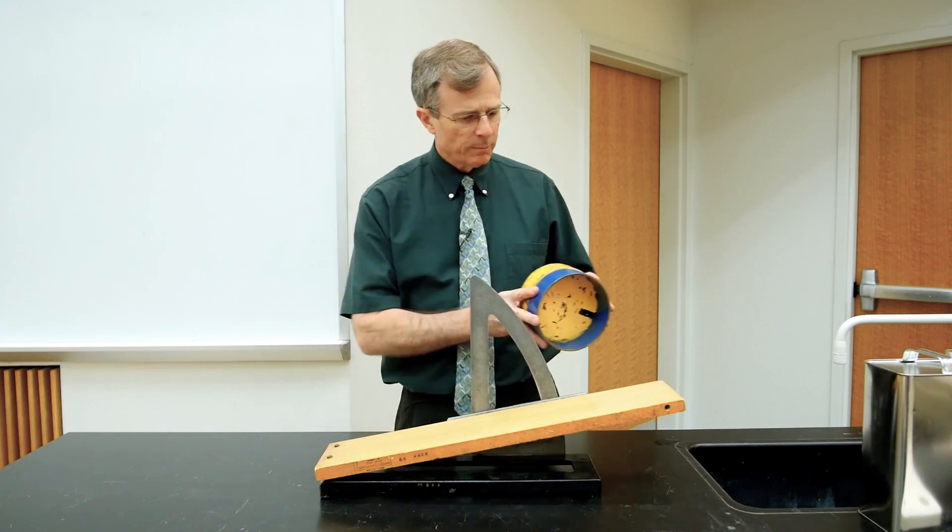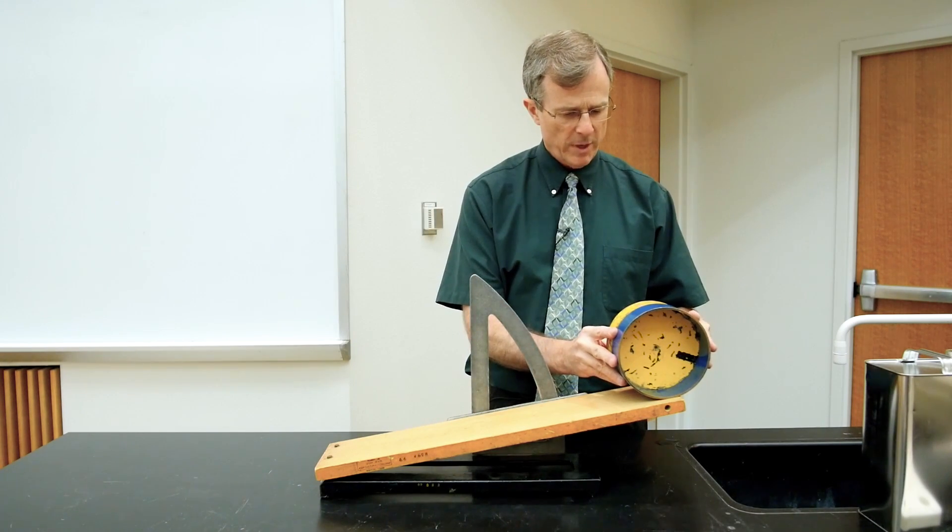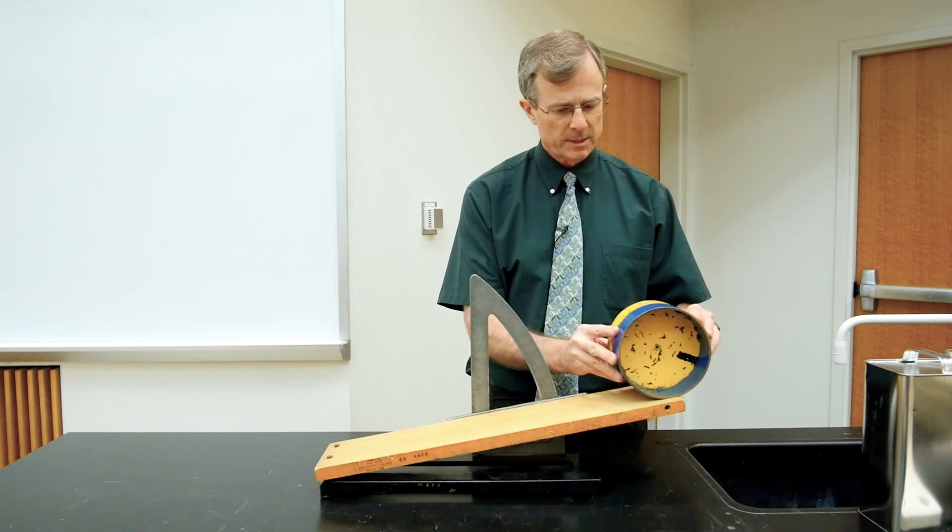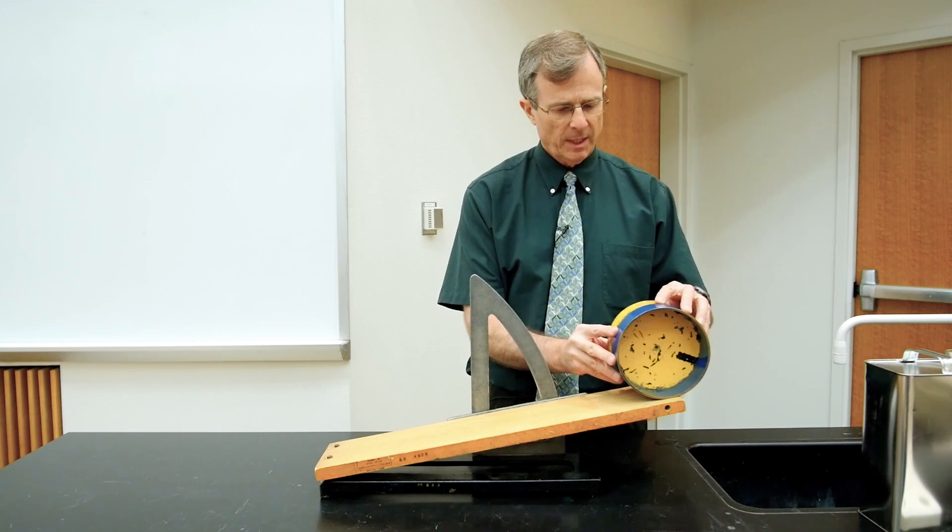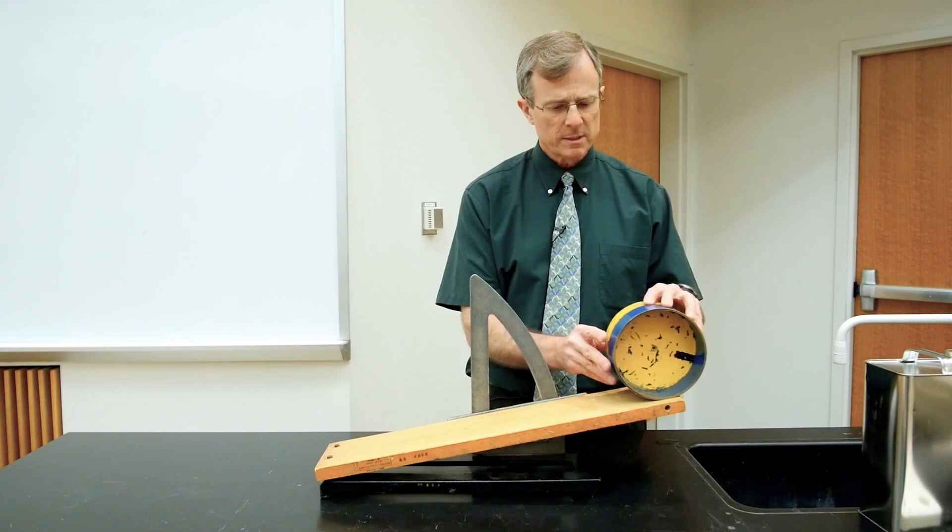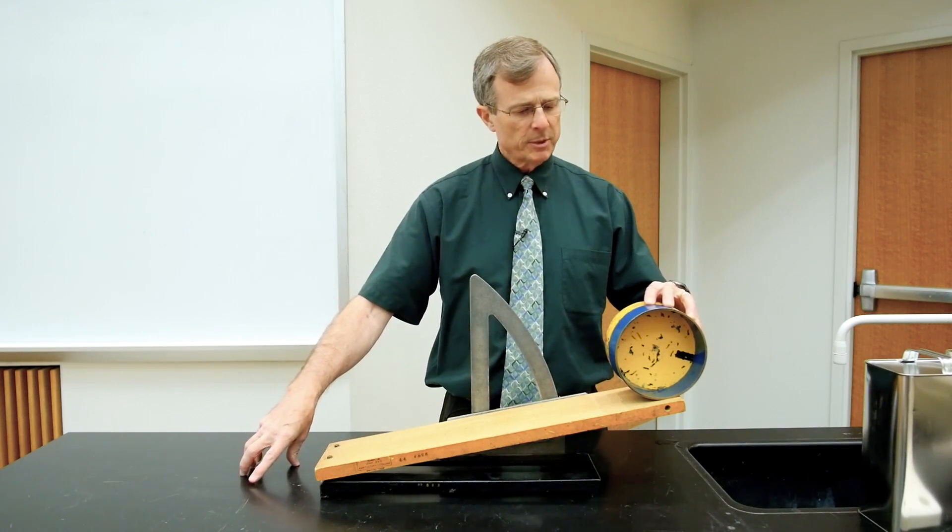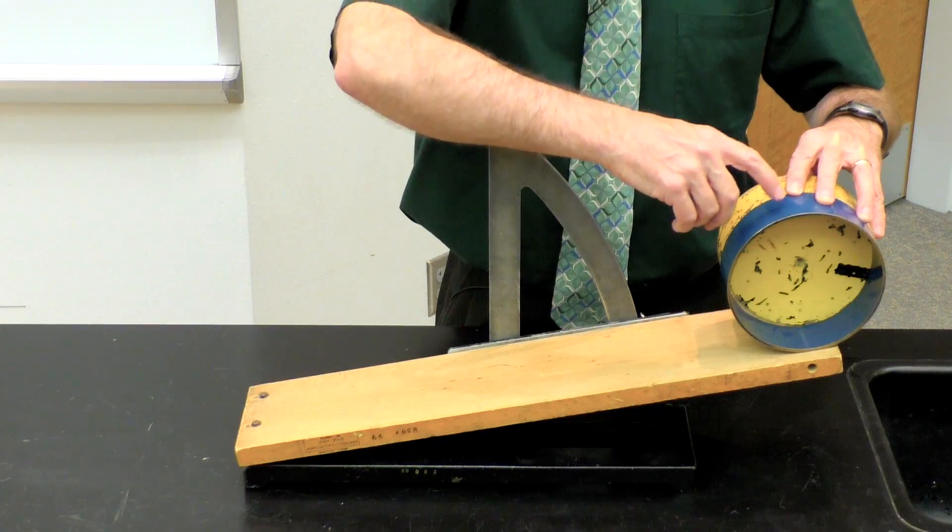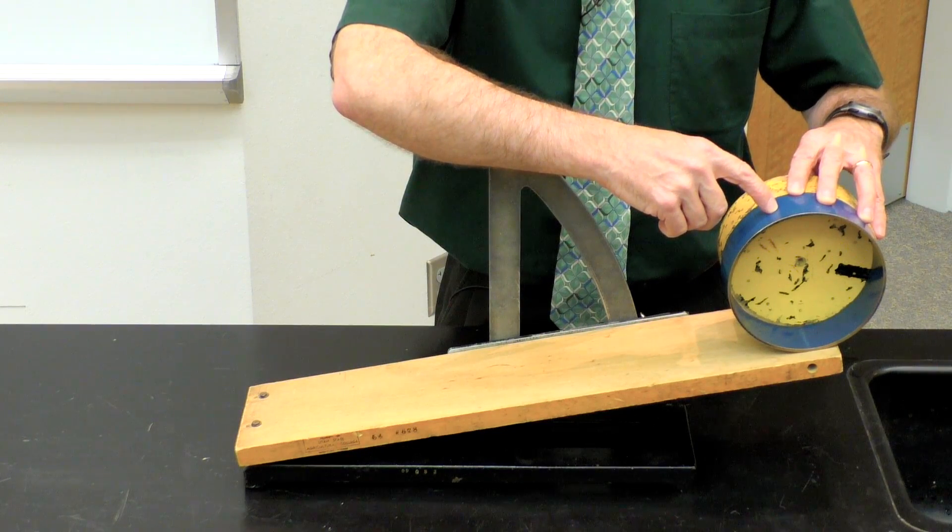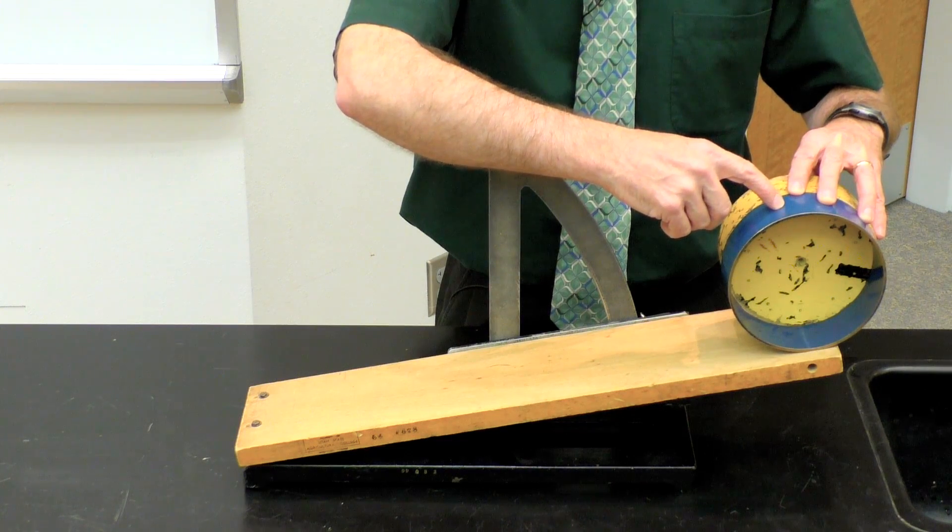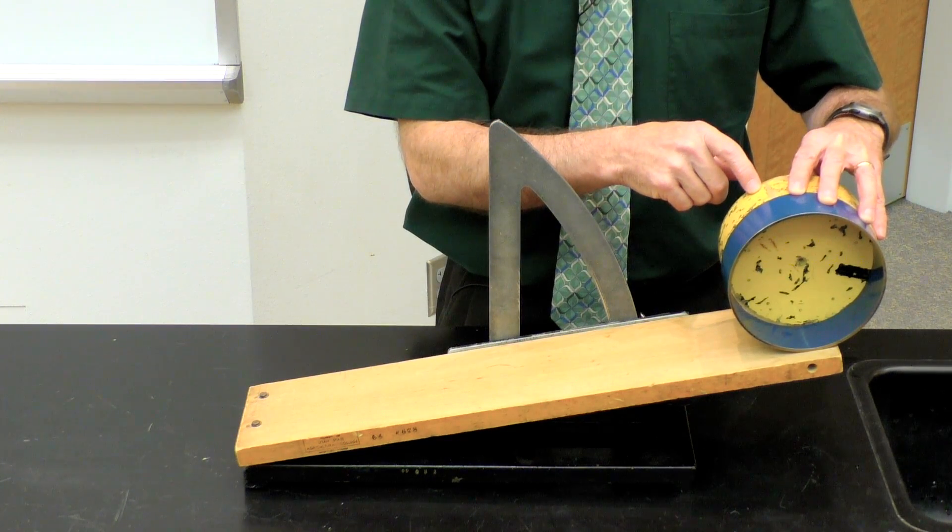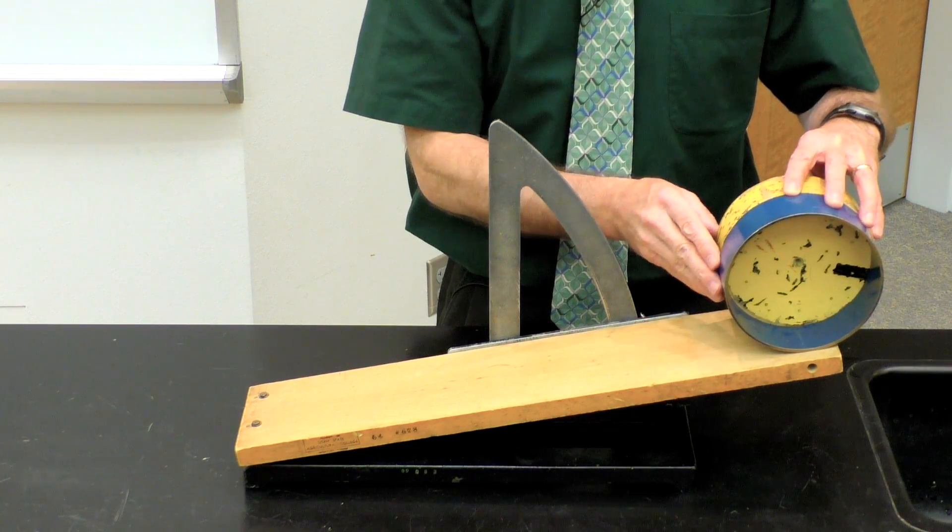So we're going to release both of these from rest at the top of this inclined plane and ask which one wins the trip to the bottom. Will it be the one with the larger moment of inertia, m r squared, or the one with the smaller moment of inertia, one-half m r squared?